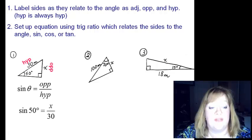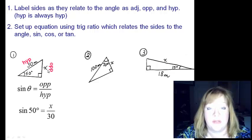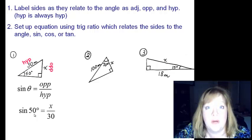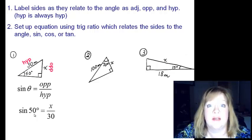So then we have sine of fifty, theta is the angle, so theta becomes fifty. And then you've got x, which is the opposite leg, and thirty which is the hypotenuse. Now at this point, if you have your graphing calculators out, make sure the mode is degree.